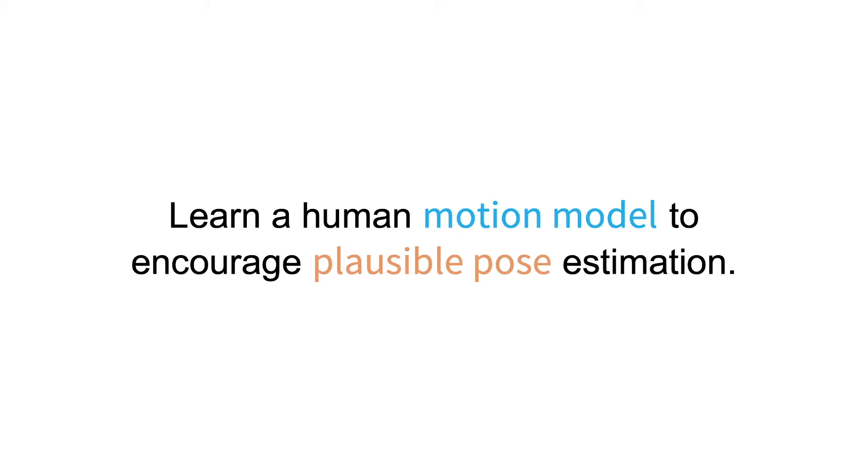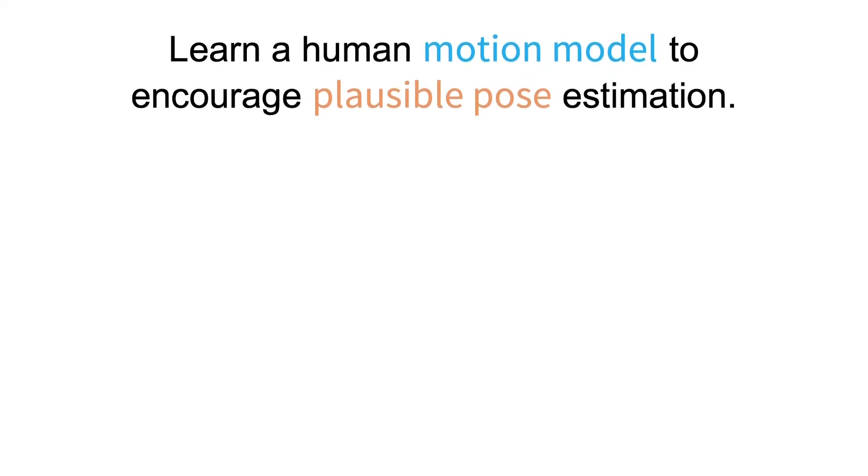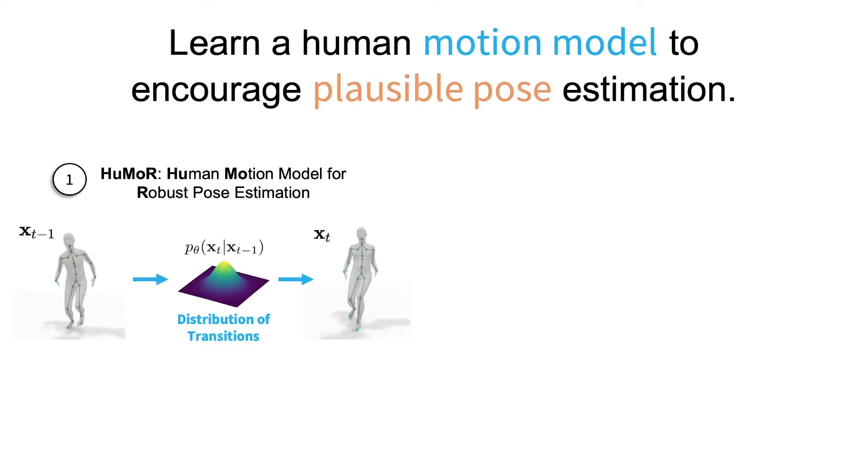To achieve this, the key idea is to first learn what constitutes plausible human motion, and then use this to constrain the motion reconstruction. In particular, we make three main contributions.